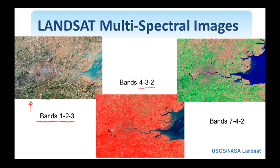Infrared is reflected differently. And here is a combination of two infrared and one visible band, which is suitable for geological and agricultural purposes.